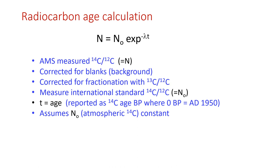Now that we've done our measurements, we want to calculate our radiocarbon age using the law of radioactive decay. We've measured the carbon-14 in the sample relative to the stable carbon — that is N in our equation. We've corrected it for blanks, that is very ancient material that should have no carbon in it. We've also corrected it for fractionation — changes in the ratio of isotopes. And we've measured an international standard to get N-naught, representing the atmosphere at the time of formation. We rearrange this equation and get T, the age. A radiocarbon age is always reported as ¹⁴C BP, where 0 BP equals AD 1950.